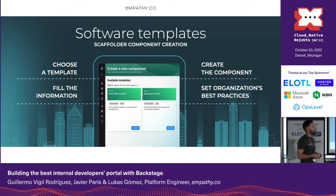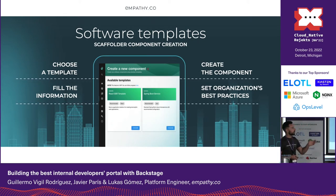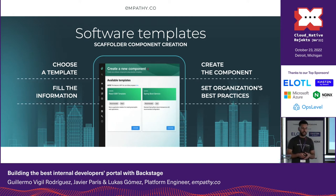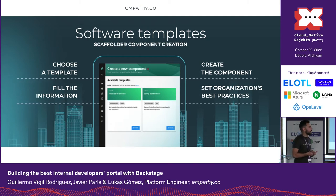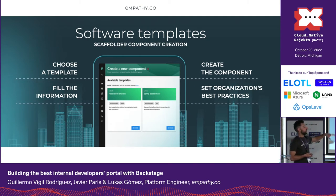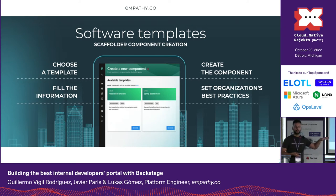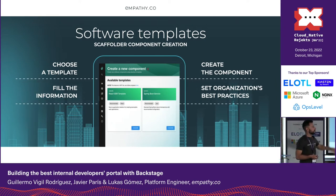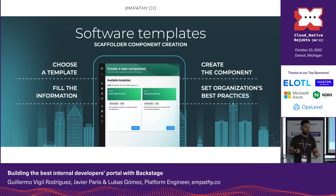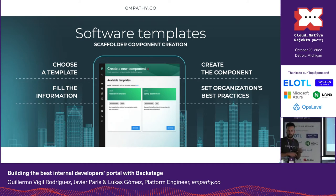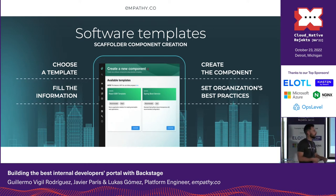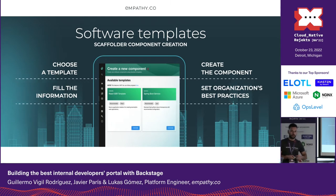Another core feature is software templates. When you have a large company with lots of new people joining, you can create templates for all your new projects — embedding your organization's best practices and security needs. When you need to create a new project, just go to Backstage, click a few buttons, put in the project name, and it will create your GitHub repository with everything you need in about two to three minutes.